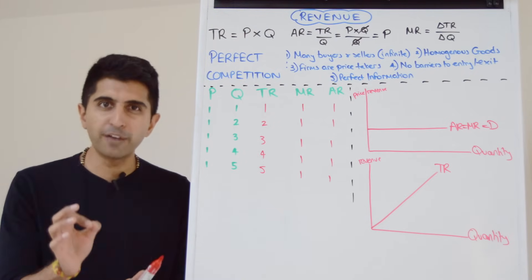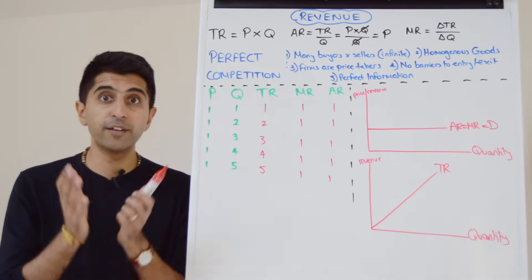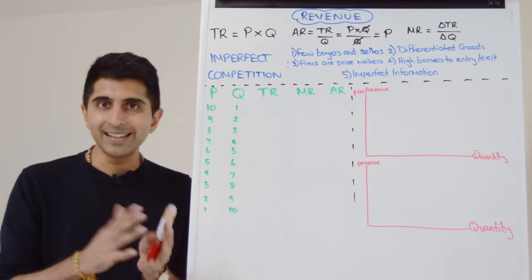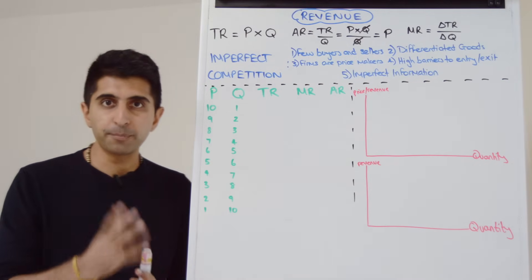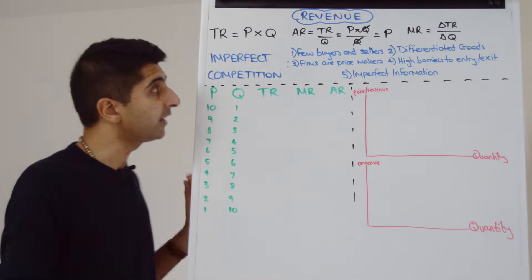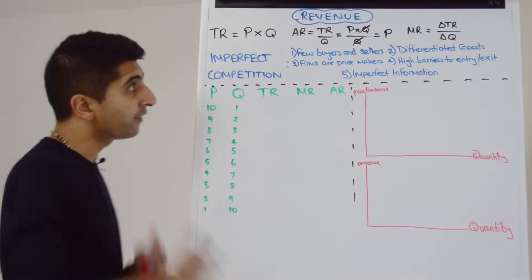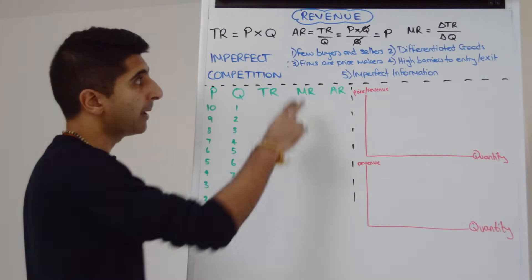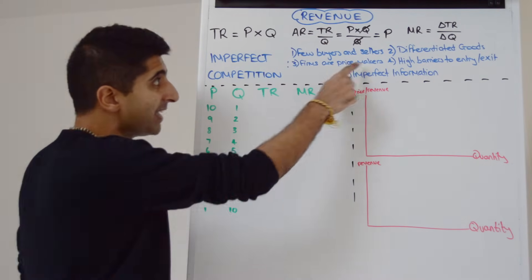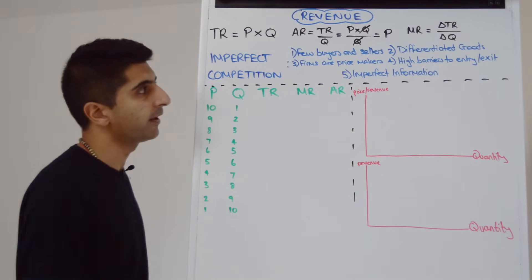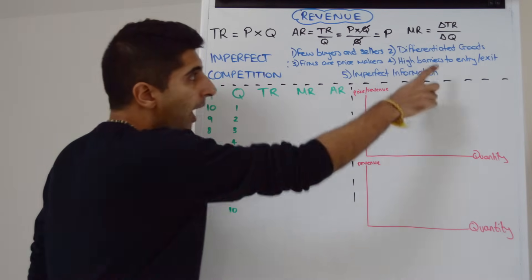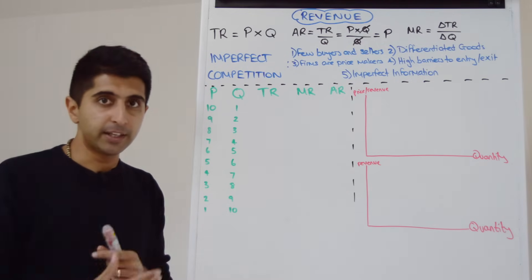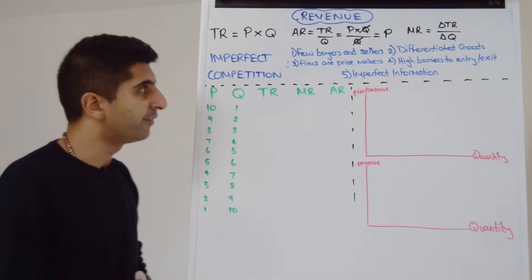What about when there is imperfect competition? How do our revenue curves change there? Well, imperfect competition is the exact reverse of perfect competition. So now there are a few buyers and sellers that are all selling differentiated goods and services, making them price makers — they can set their own prices. There are high barriers to entry and exit, and there is imperfect information of market conditions — everything in reverse.